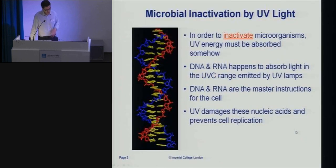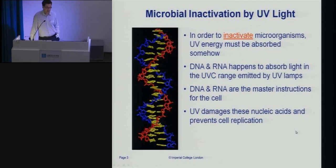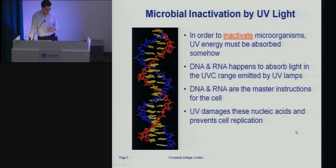We talk about inactivation of microbes by UV light instead of killing. There's a subtle but important difference between the two. Inactivation means that the organism is changed in some way which means it can't reproduce anymore — it can't form copies of itself. A public health person will tell you that's pretty well as good as killing the organism, because once it gets in your gut, it can't form copies of itself, spread throughout your body, and cause infection.